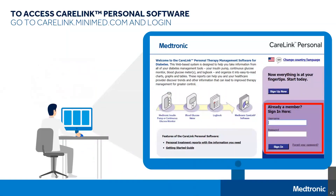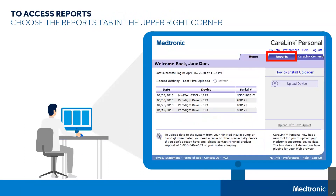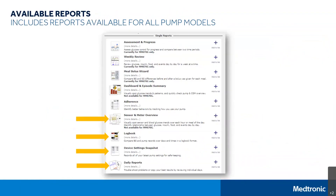To access CareLink personal software from home, please visit carelink.minimed.com. Here is a picture of the sign-in page. If you have not already done so, you can sign up with a free account and create a username and password. Once you've logged in to CareLink and uploaded your pump, you can click on the Reports tab. Here are examples of the various reports you will find, and the four highlighted at the bottom are the four we will take a closer look at.